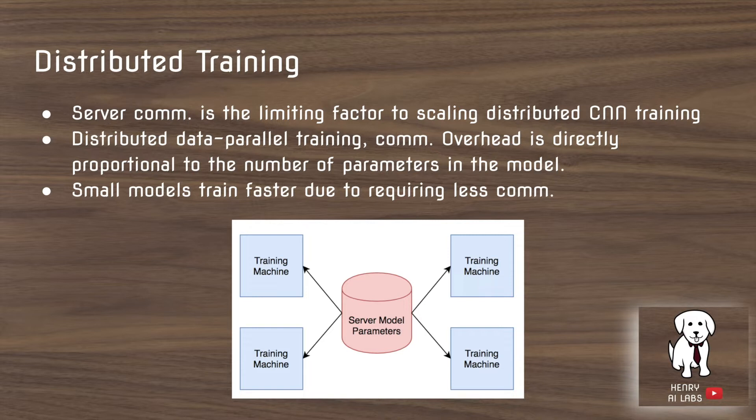The machines send these updates back to the model parameter server, and in this way it distributes the learning between the different machines.